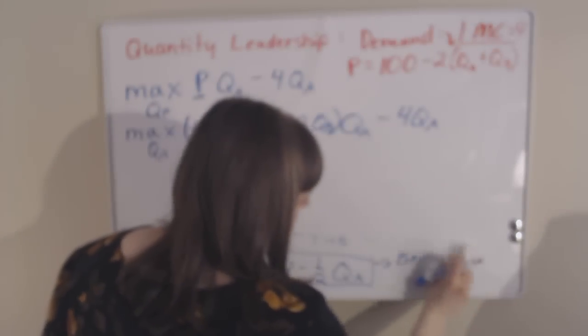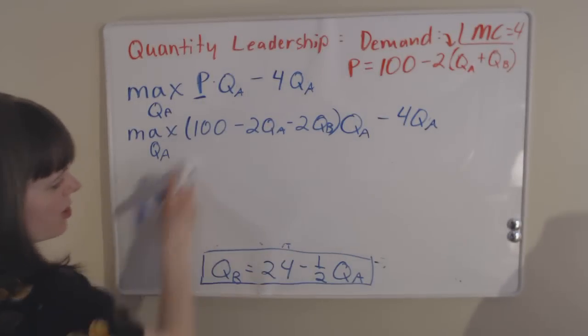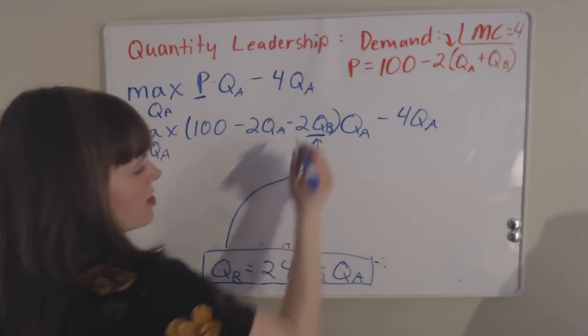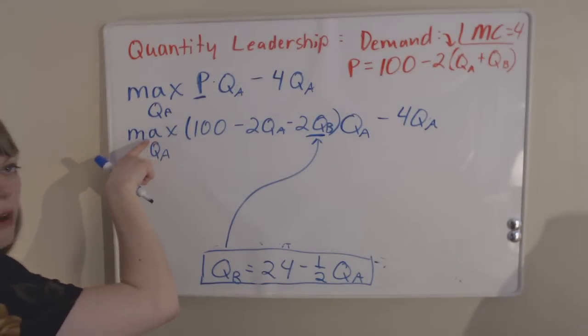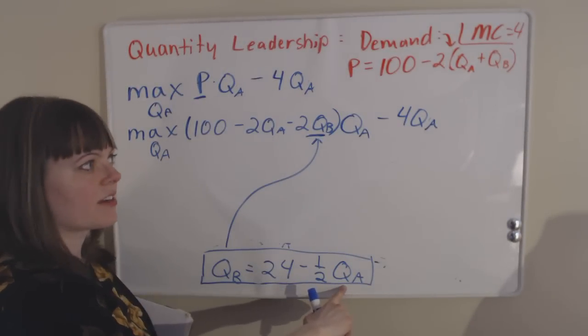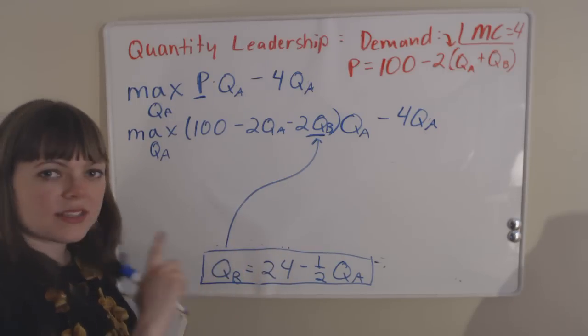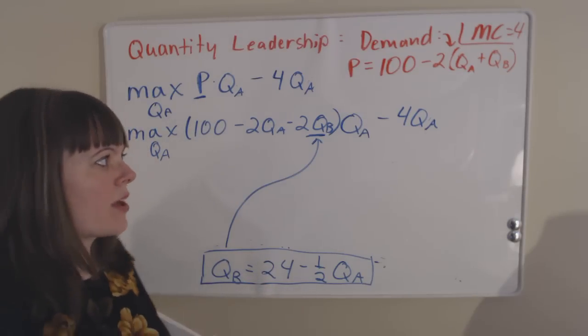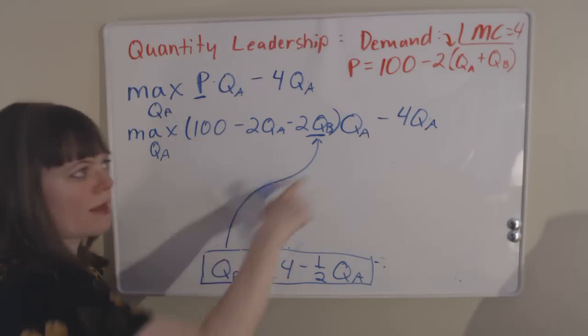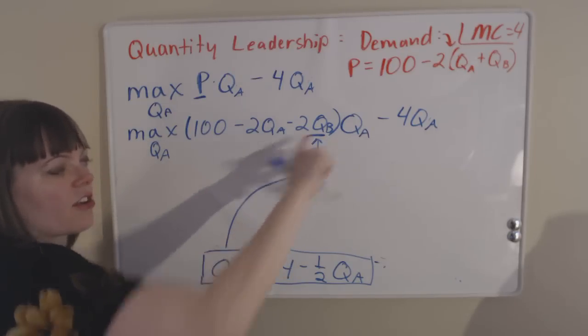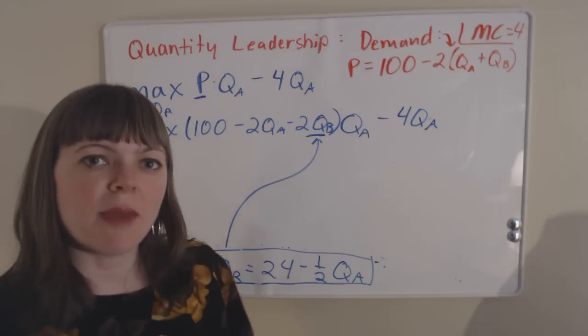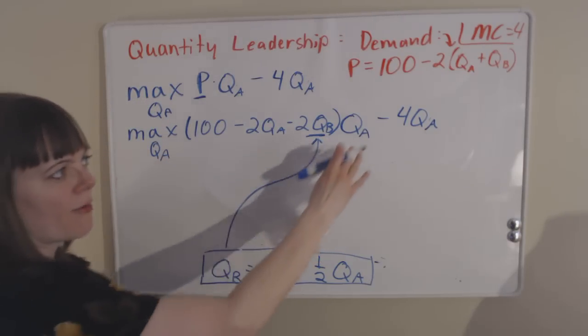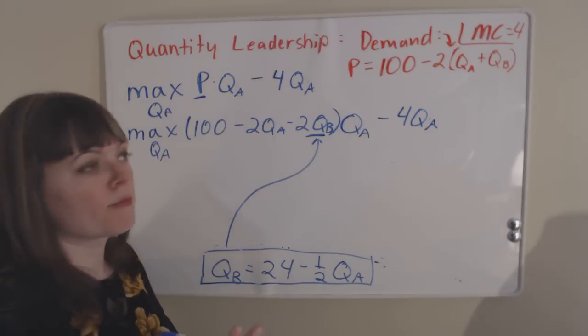When we do solve it, we are going to solve it by plugging firm B's best response function in. We're going to plug this QB up into here. And when we do that, our profit maximization problem is only going to have QAs left in it. They do this because they know exactly how their competitor is going to respond, so they might as well anticipate that response when they're setting their own price. This is kind of a way for firm A to bully firm B. As you might imagine, in quantity leadership, firm A is going to produce way more than firm B will end up producing.